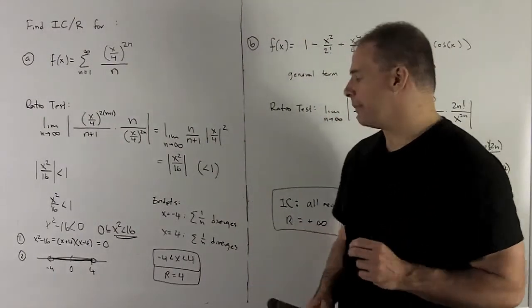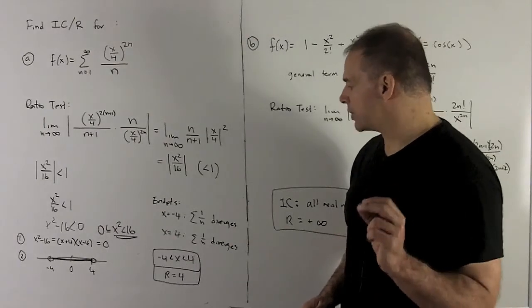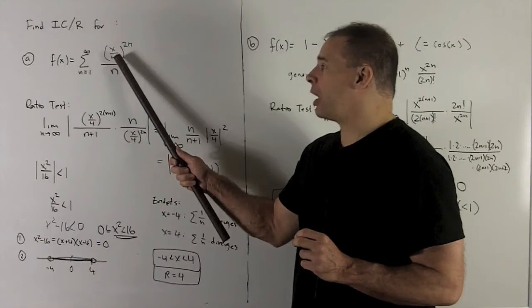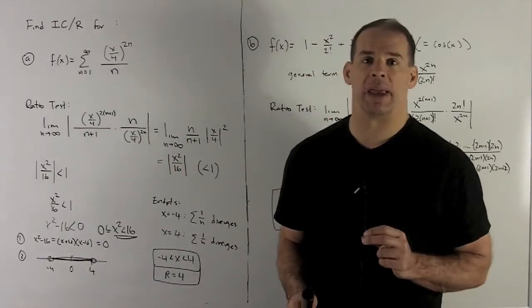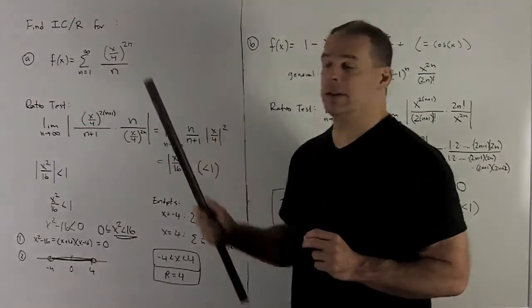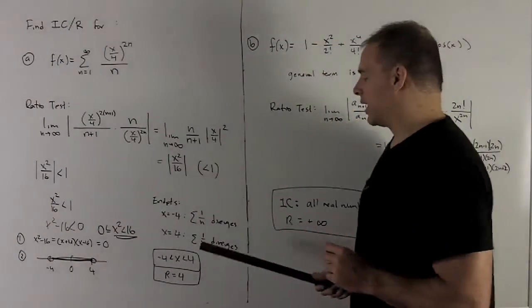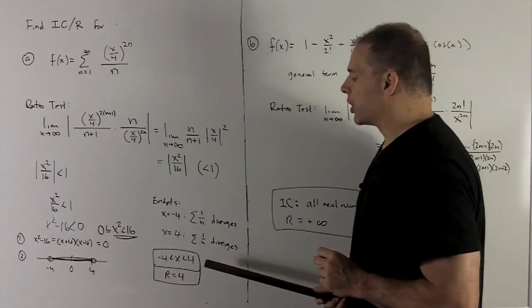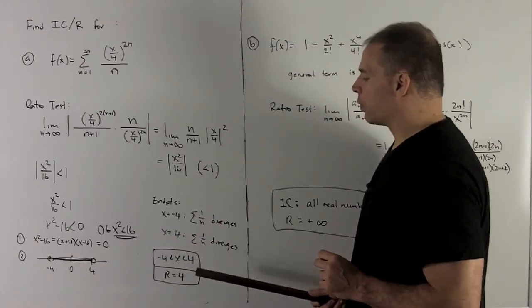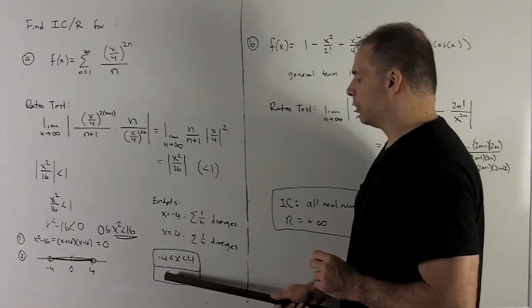If we go with the minus 4, what's going to happen? That's going to give me a minus 1, but we're raising it to 2n. So squaring that thing is going to make it a 1, and then 1 to the n is always 1. So again, we're looking at series for 1 over n, so that'll diverge also. So our interval of convergence is going to be minus 4 to 4. Radius of convergence is going to be 4.